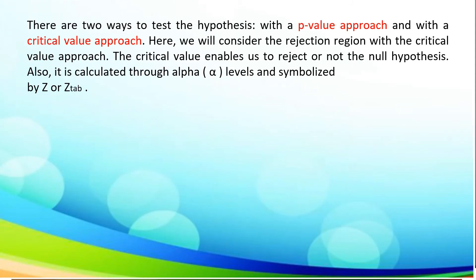Let us remember there are two ways to test a hypothesis: with the P-value approach and with the critical value approach. Here, we will consider the rejection region with the critical value approach. The critical value enables us to reject or not the null hypothesis, and it is calculated through alpha and symbolized by Z or Z-tab.